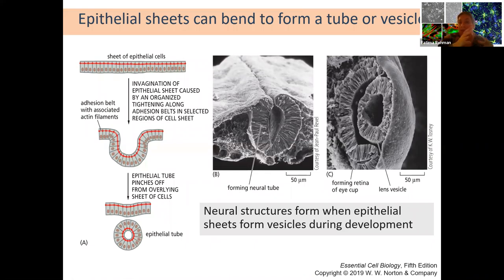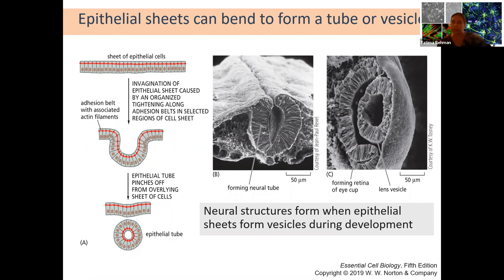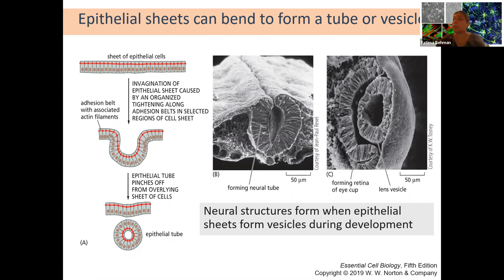Having this specific structure allows cells to be flexible in the shapes and structures they can develop. Think of ribbons—some have a thin metal wire on one side giving structure. Similarly, the actin belt holds the epithelial sheet structure in place on one side, allowing the sheet to be manipulated into different shapes. Without it, cells would just collapse on each other. The strong actin adhesion belt allows us to create structures out of epithelial sheets.